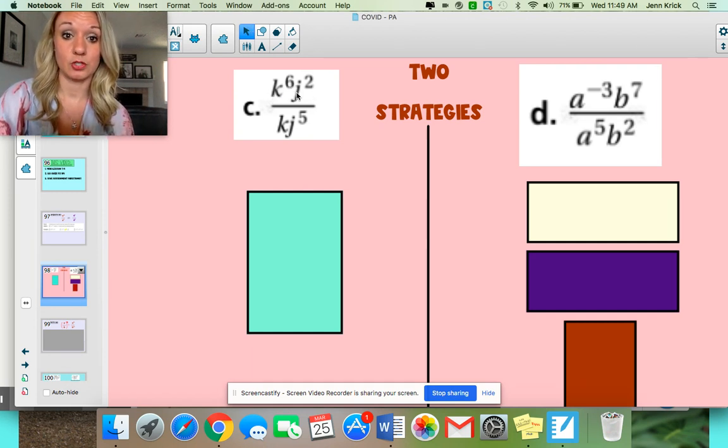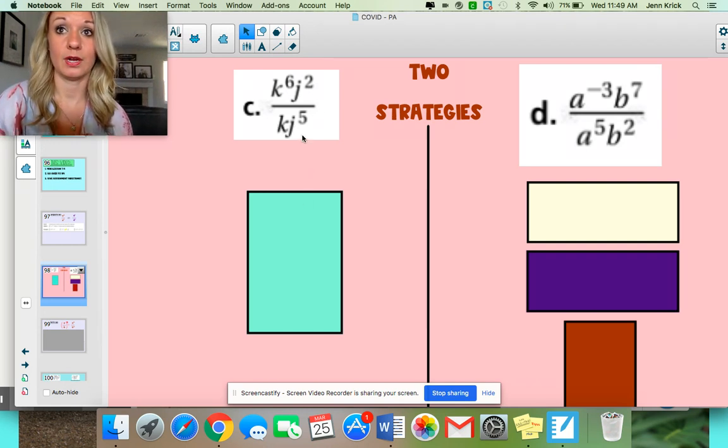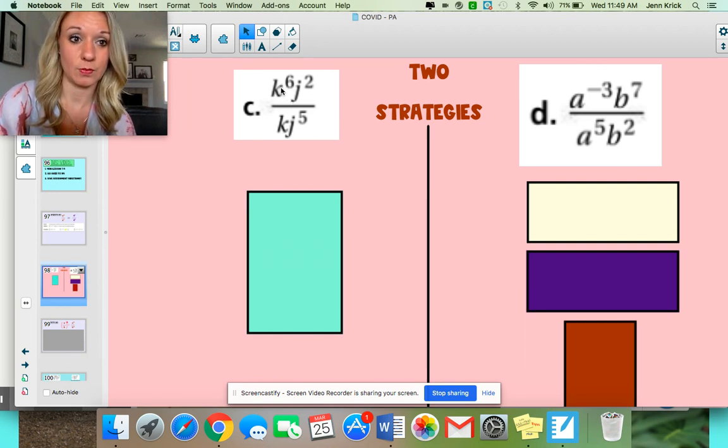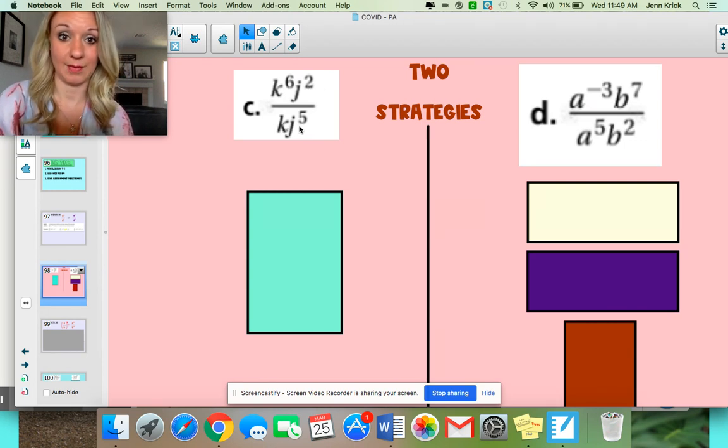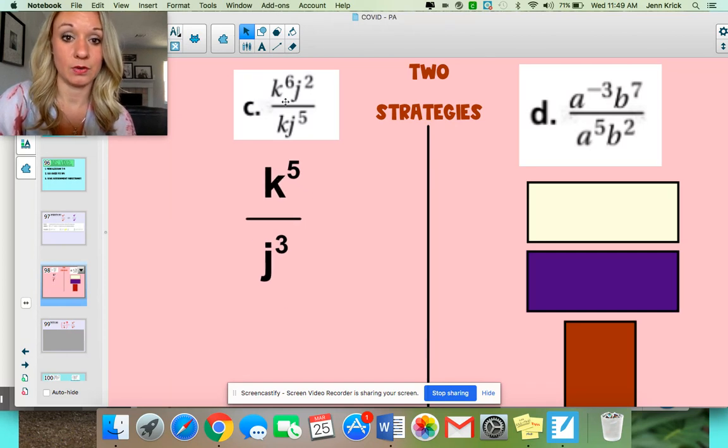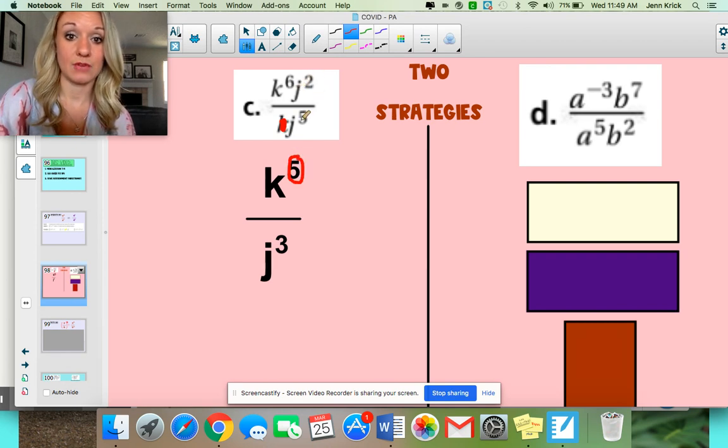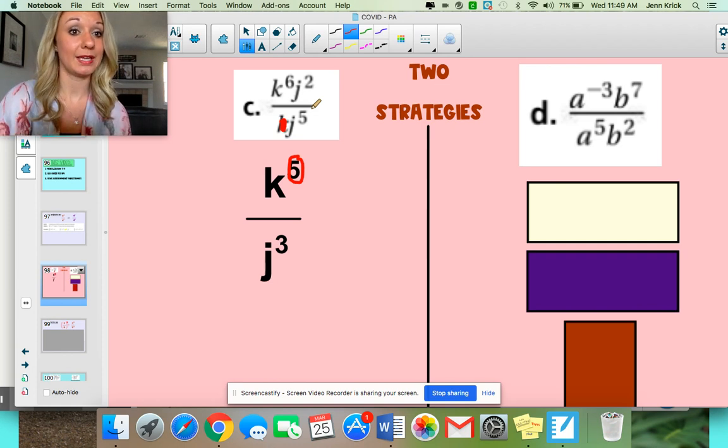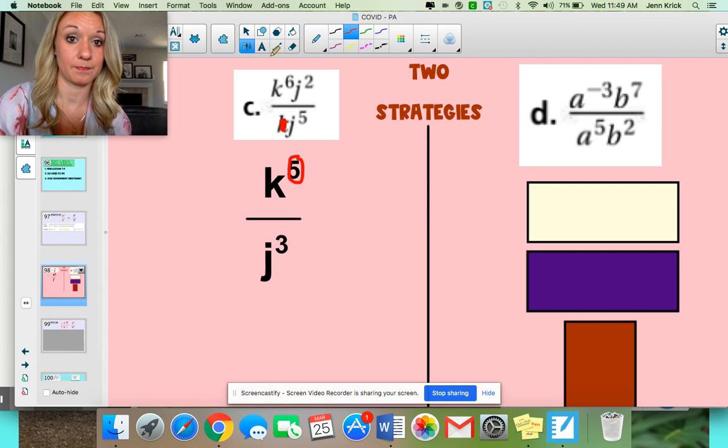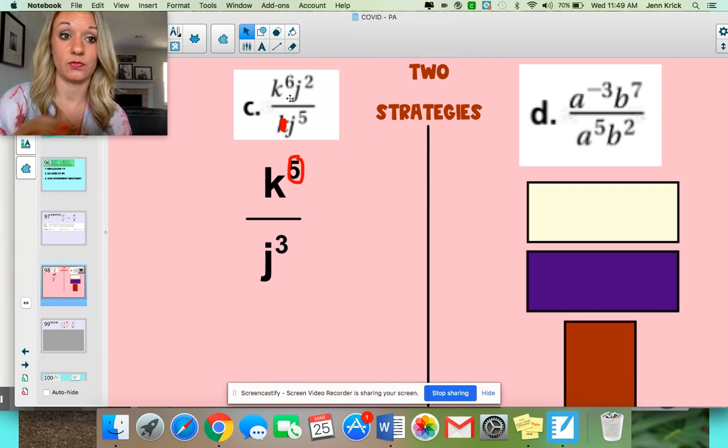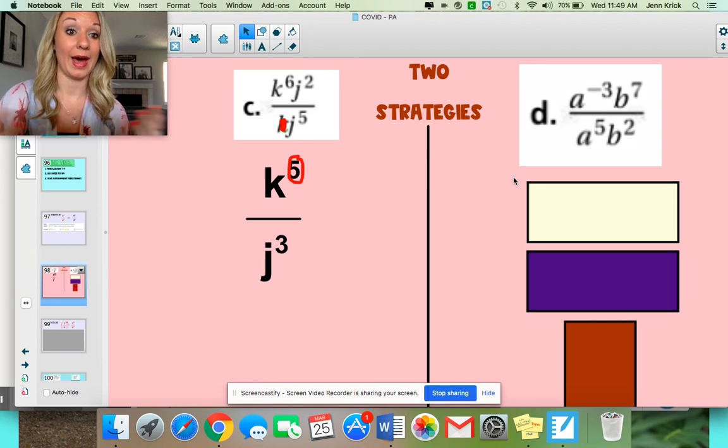You've got k to the sixth j to the second over k j to the fifth. So this property really works with your internal dialogue saying, in my numerator, do I have more k's or do I have more in my denominator? And do I have more j's in my numerator or more j's in my denominator? So this is telling you, because I've got 6 here and 1 here, I can get rid of the 1 in my denominator and then just take it away and that would become a 5 because 6 minus 1 is 5. For my j's, I've got 2 here, 5 here. Because I have more in my denominator, we're going to keep that variable down there and then 5 minus 2 is 3.